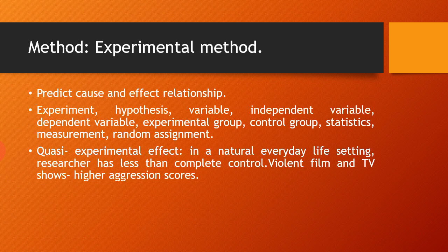In correlational method, we are finding the relationship between two or more variables such that systematic increase or decrease in the magnitude of one variable is accompanied by systematic increase or decrease in the magnitude of the other variables. There are three different types of correlations: positive correlation, negative correlation, and zero correlation.